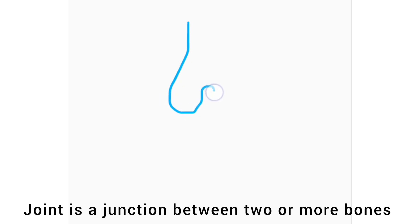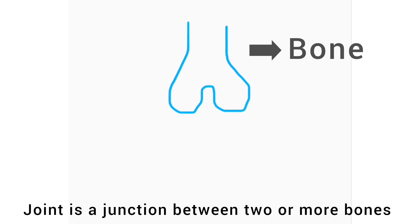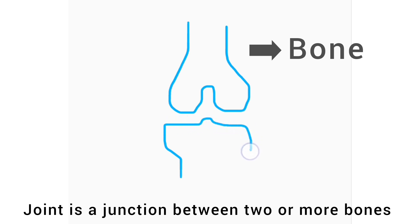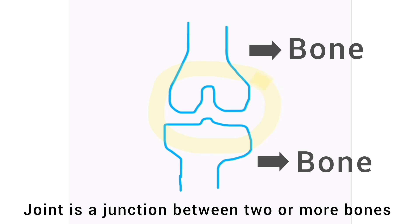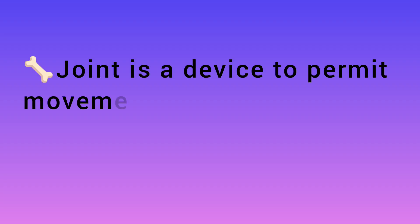What is a joint? A joint is a junction between two or more bones. A joint is a device to permit movements; however, some joints are immobile. So the joint has a main function of enabling movement.